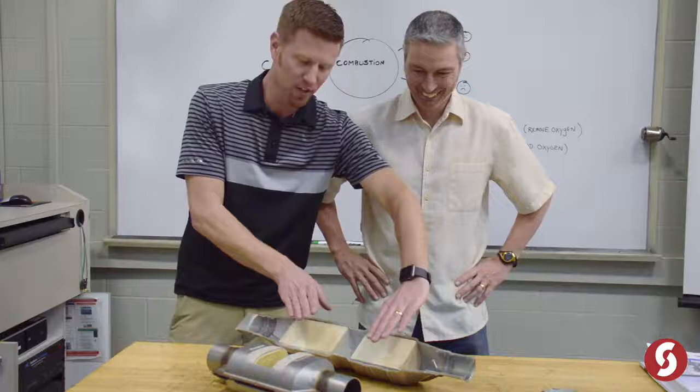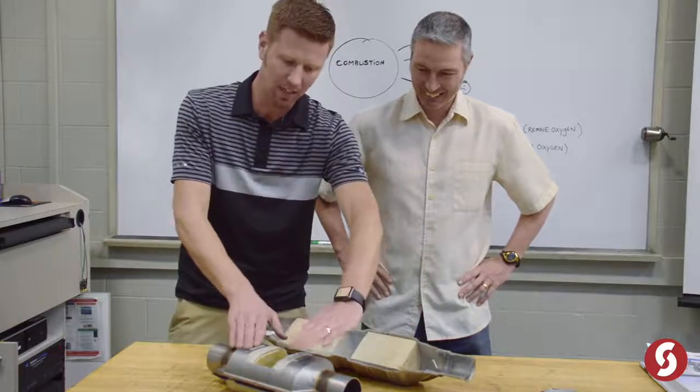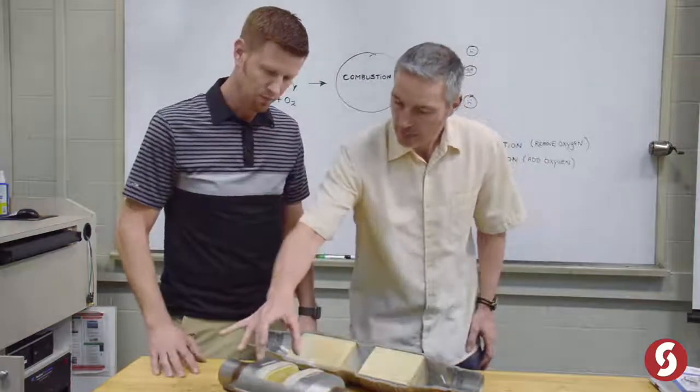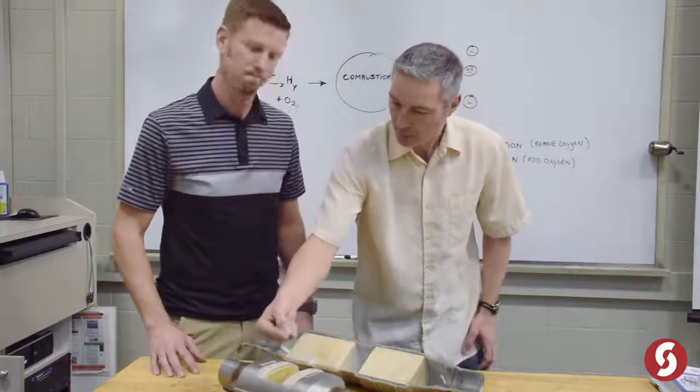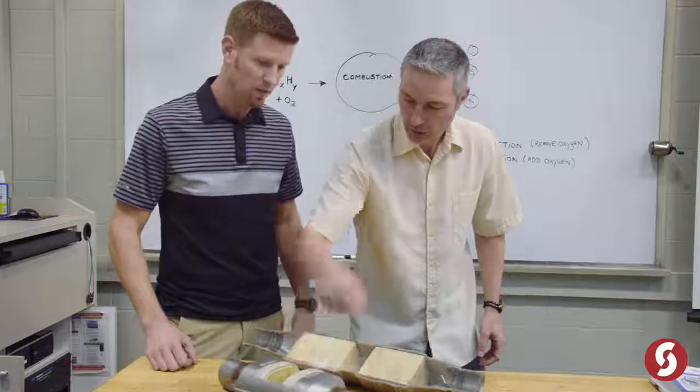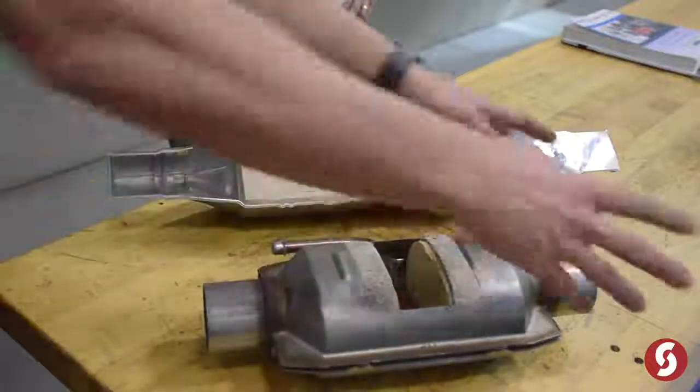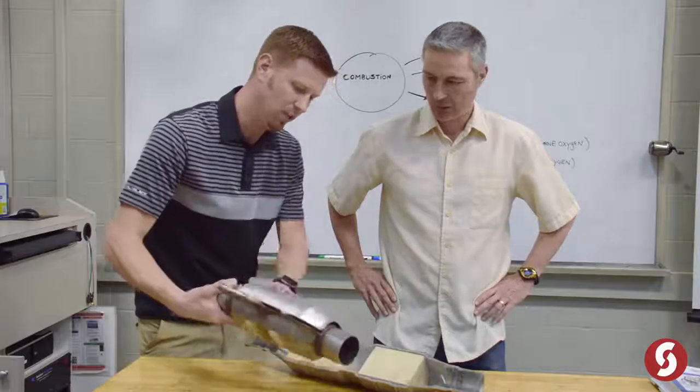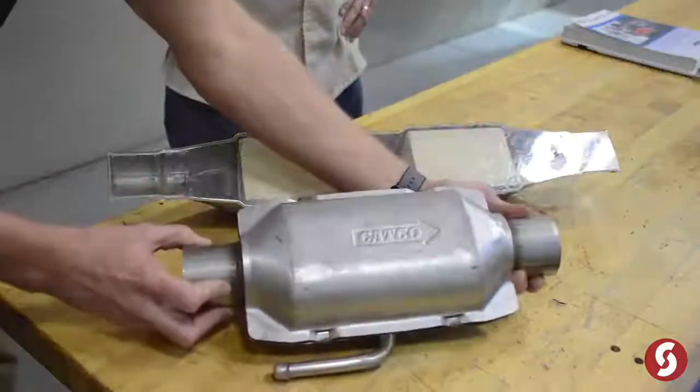Now we want to show you just again the two blocks inside the catalytic converter. So, this is where it's coming in from the engine. And so this is your reduction and that's your oxidation. Exactly. So engine side, tailpipe side. And again, most of your catalytic converters, especially aftermarket, are going to be marked with an arrow.